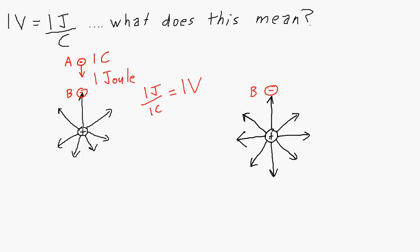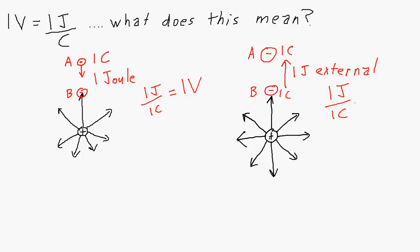Alternatively, if that negative charge is at point B and we apply an external force to move it back to point A, it's still one coulomb of charge and it will take one joule of external energy to move it. That still represents one joule per coulomb — still equal to one volt. But in this case, it's external energy moving the charge against the direction the electric field is trying to move it, whereas in the first case it was the electric field doing the work.